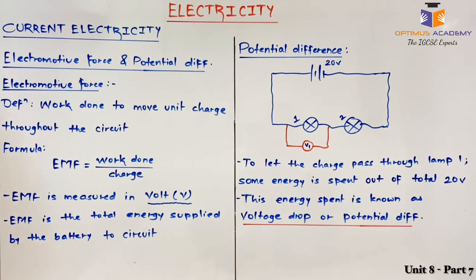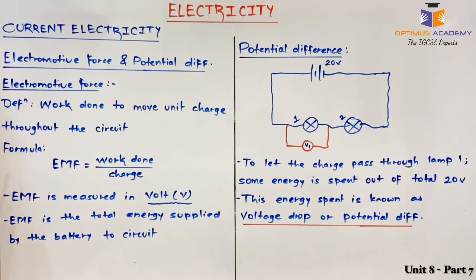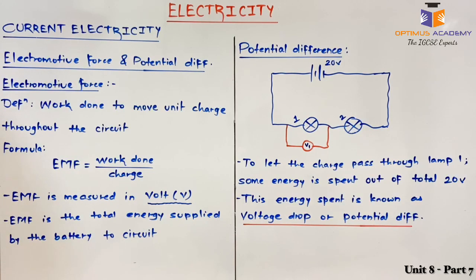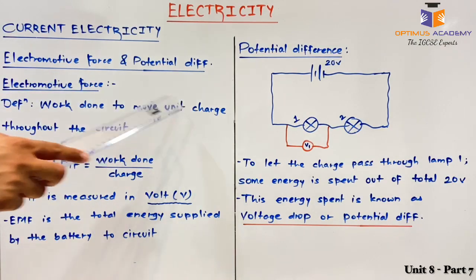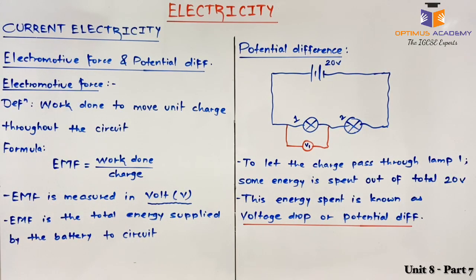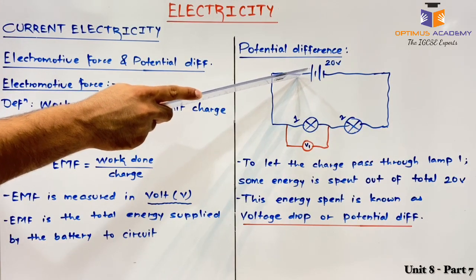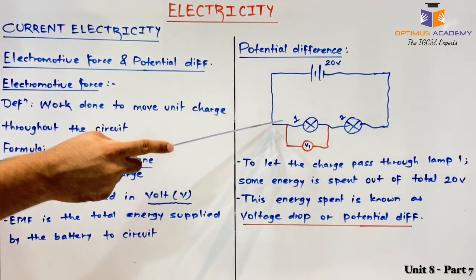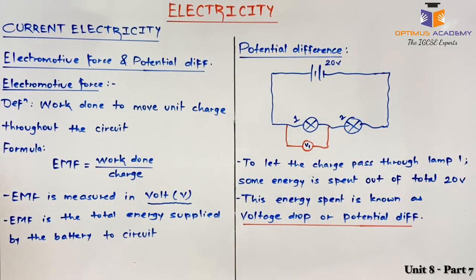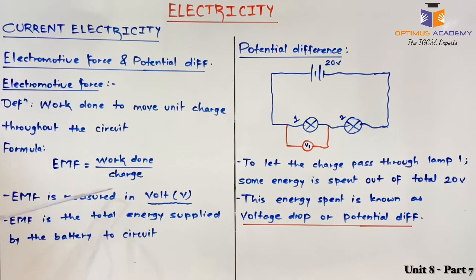Now in the second part of the video we will be discussing about electromotive force and potential difference. First, electromotive force — what do you understand by the word electromotive? Here electro stands for electron and motive stands for motion. So to move an electron, how much force we require — that is nothing but electromotive force. We define EMF as work done to move one unit charge throughout the circuit. So the formula is EMF equals to work done upon charge. EMF is measured in volt.